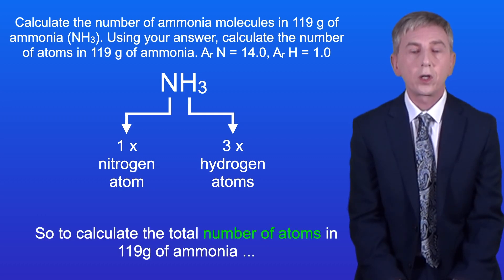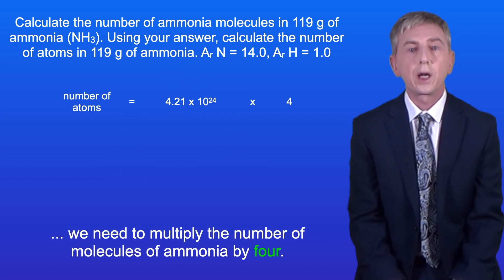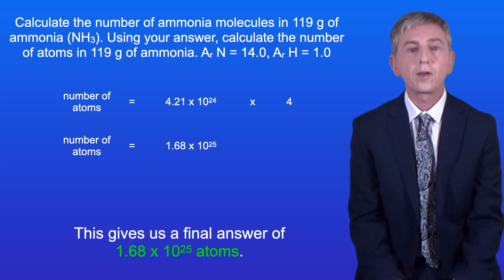So to calculate the total number of atoms in 119 grams of ammonia, we need to multiply the number of molecules of ammonia by four. This gives us a final answer of 1.68 times 10 to the power of 25 atoms.